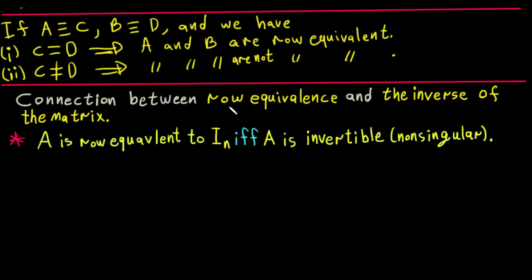Let's learn the connection between row equivalence and the inverse of the matrix. This is an additional property to know more about row equivalence — we will talk about how this is important and how we can use it.